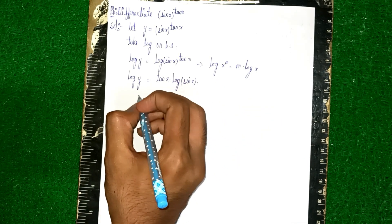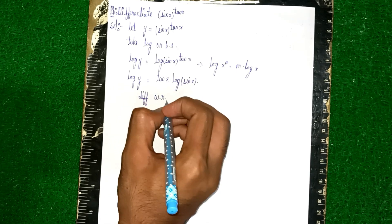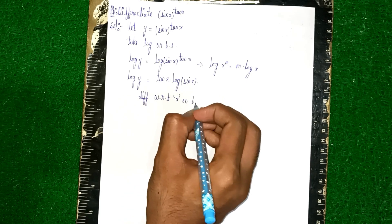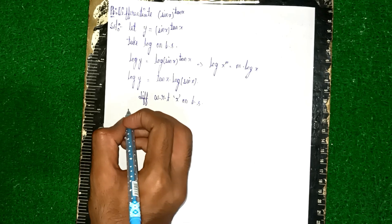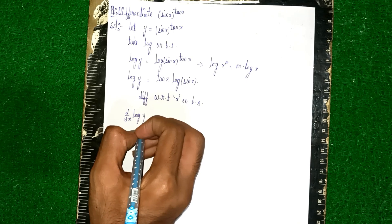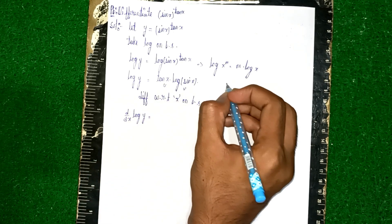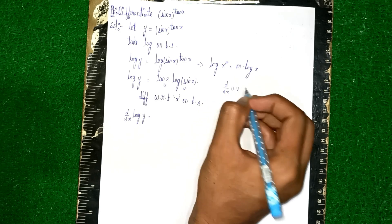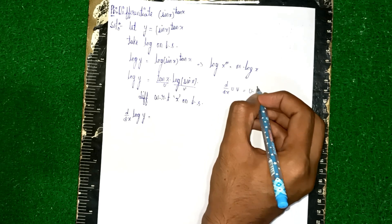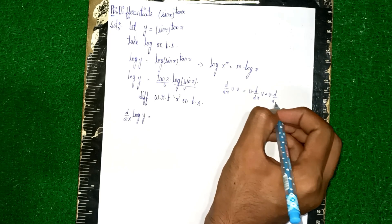Now we differentiate with respect to x on both sides. So it becomes d/dx of log(y) on the left. On the right, I am using the UV rule: d/dx(uv) = u·d/dx(v) + v·d/dx(u).